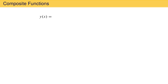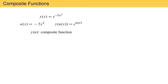Now we want to consider the function y of x equal to e to the negative 5x squared. Our rules tell us how to find the derivative of the natural exponential e to the x and how to find the derivative of negative 5x squared, but they don't tell us how to do so when the functions are combined in this manner. We can make progress by defining a new function u as a function of x to be negative 5x squared, the entire contents of the exponent. We can then write the function y as e to the u, a composite function — a function of a function.